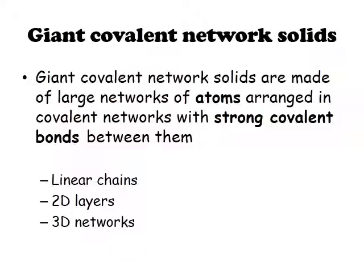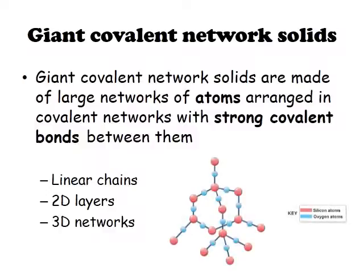Giant covalent network solids are made of large networks of atoms arranged with strong covalent bonds between them. This includes systems of linear chains, 2D layers like graphite — which is an allotrope of carbon — and 3D networks like silicon dioxide, which has strong covalent bonds between the silicon and oxygen atoms, with every oxygen atom bonded to two silicons and every silicon bonded to four adjacent oxygen atoms in a lattice.